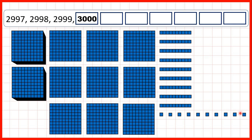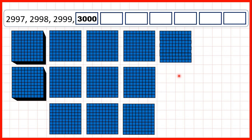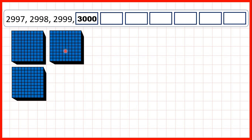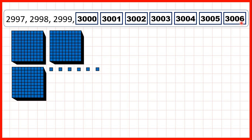That doesn't look like 3000, but remember, because we now have 10 of these ones, we can exchange 10 ones for one 10. But now we have 10 tens, so we can exchange those for one extra 100, and doing that gives us 10 hundreds. And we can exchange 10 hundreds for one more thousand. So that's why one more than 2999 is 3000, and then we can keep on adding ones until we get to 3006.